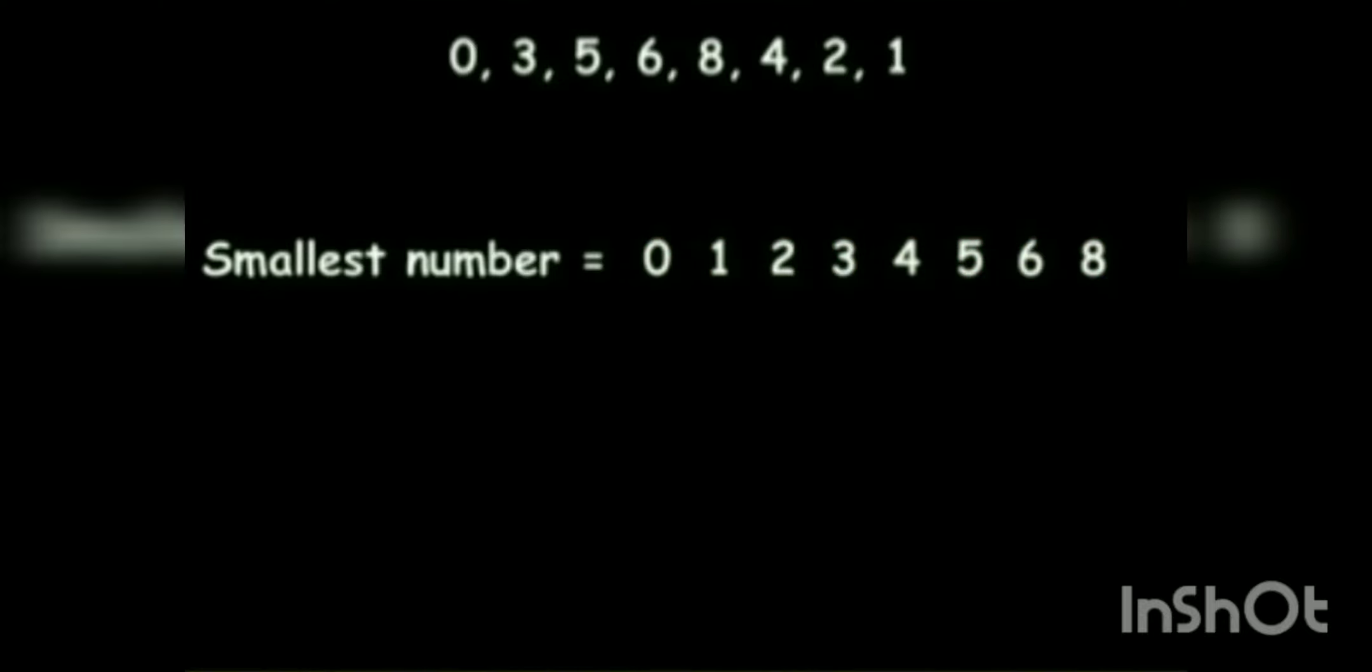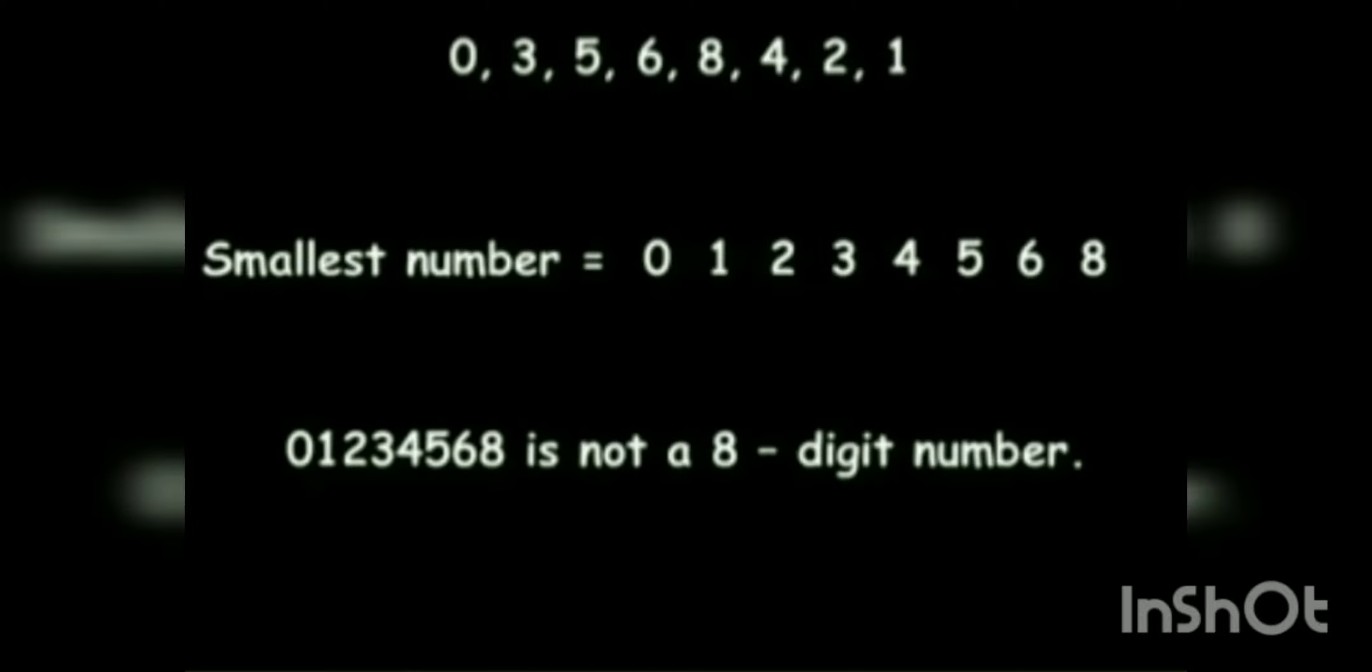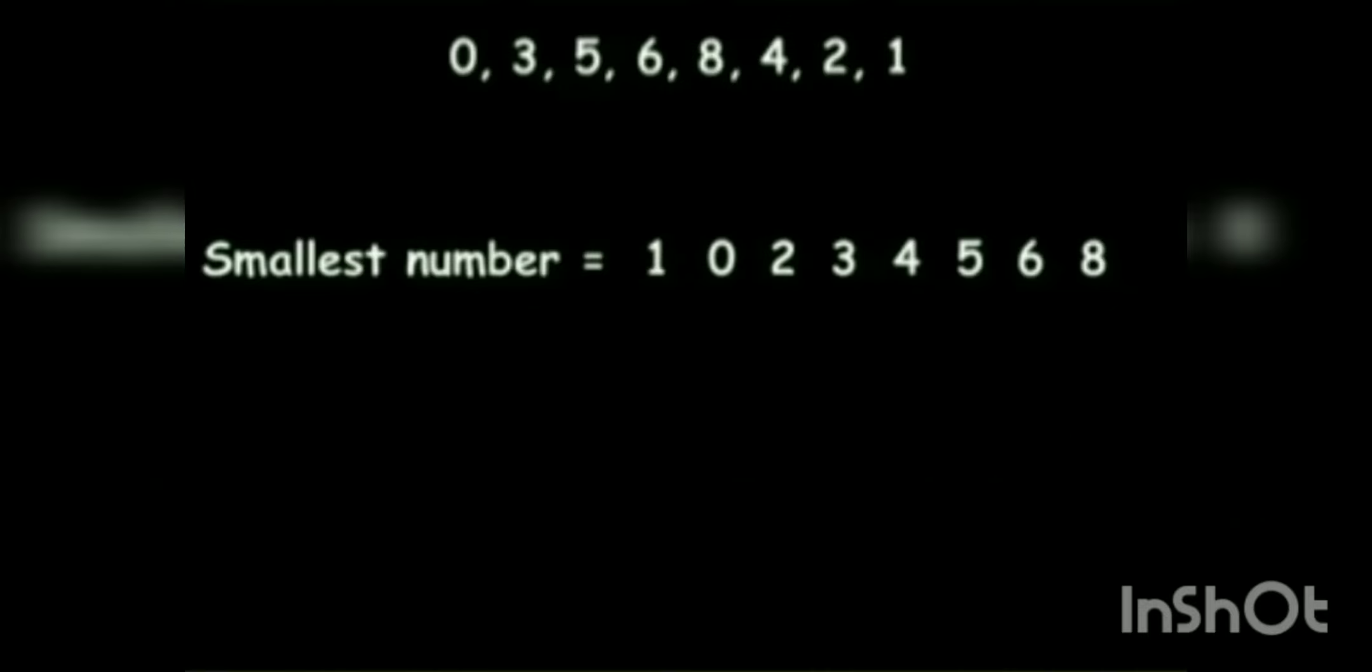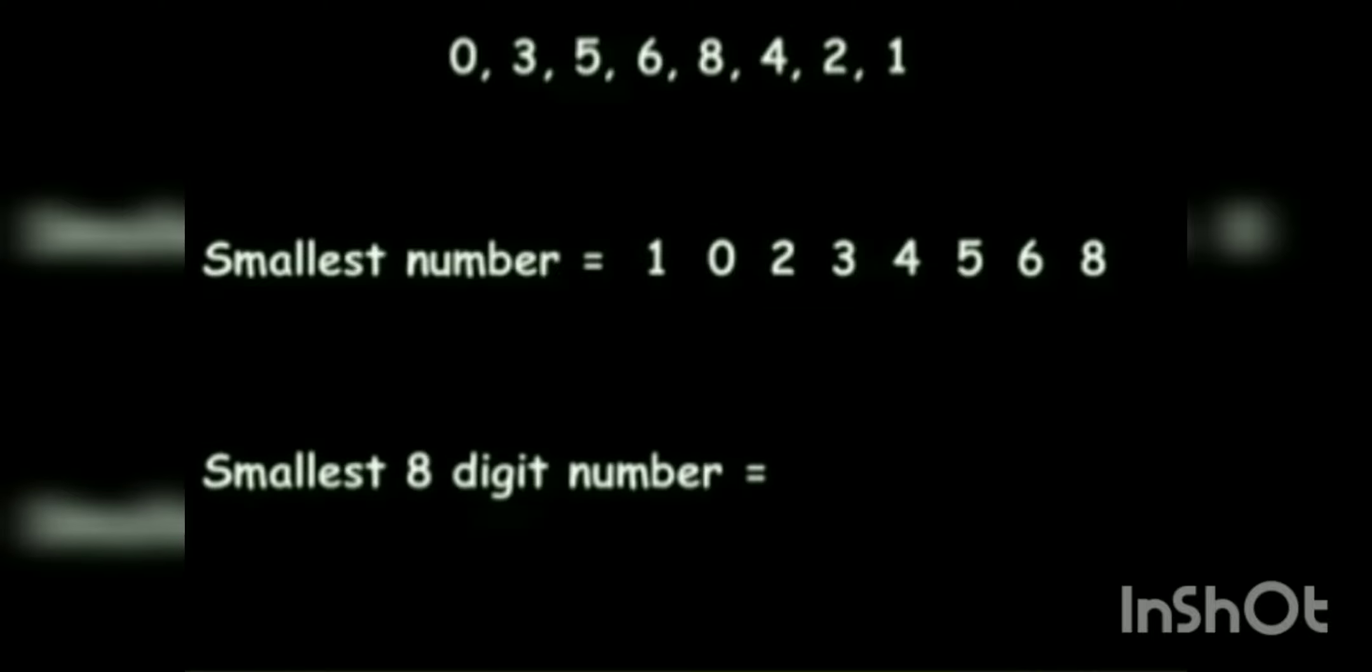So, in order to form 8 digit number, we need to shift 0 next to 1. So, now smallest number is 1, 0, 2, 3, 4, 5, 6, 8.